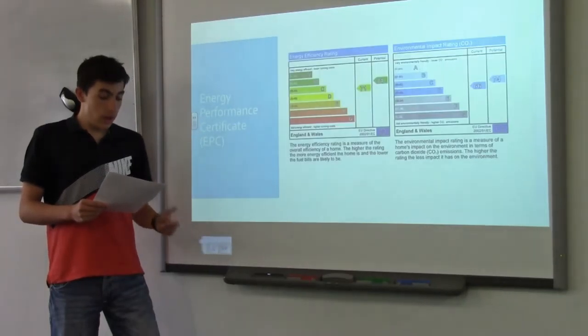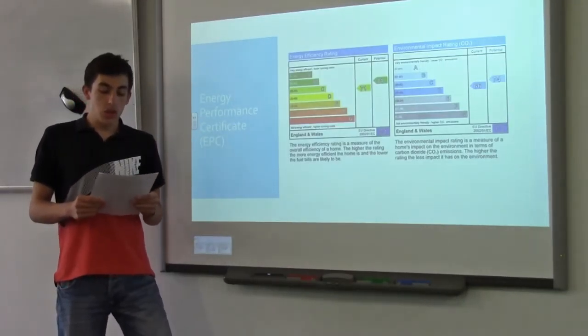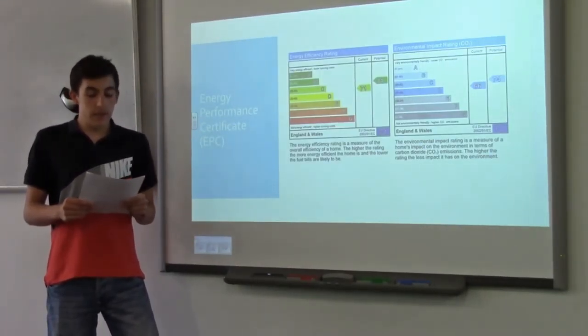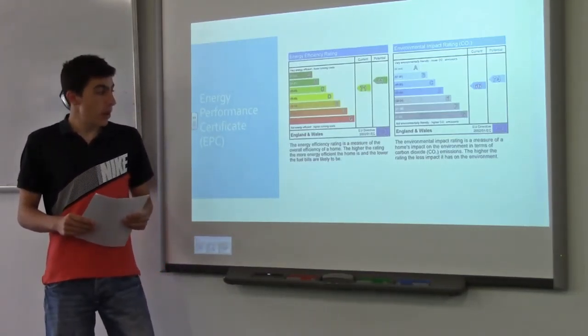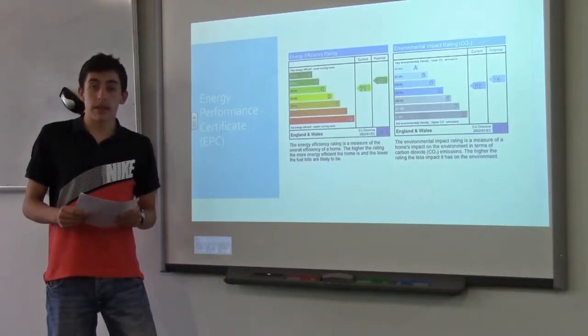Following this is an EPC, or an Energy Performance Certificate, which is used to measure both the energy efficiency and the environmental impact of a domestic property, by taking into account several factors, by showing it as an SAP or a standard assessment procedure score.